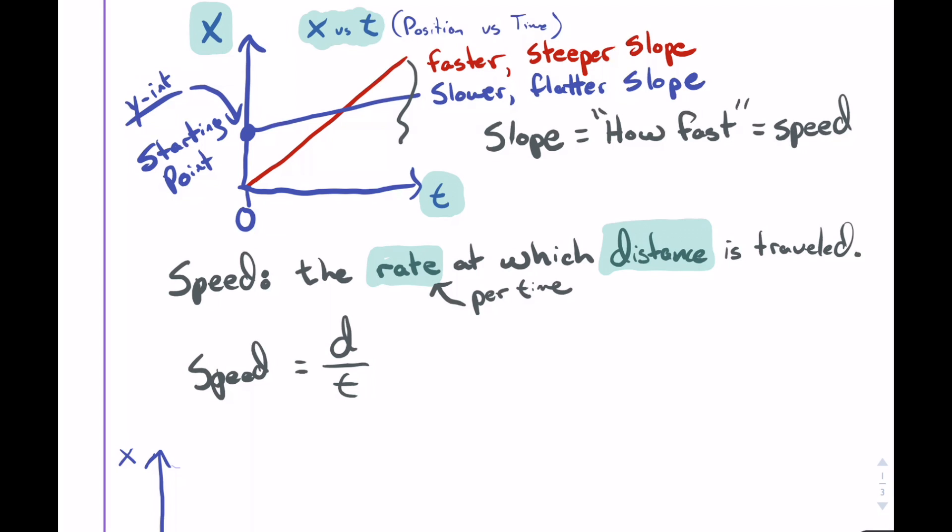This would say distance per time, and that is how you actually calculate speed. Where this comes from is if we go back up to the graph, you can see that the distance you travel would be your rise, and the amount of time it takes would be your run.